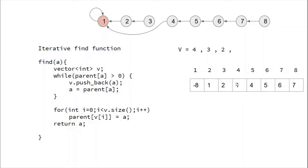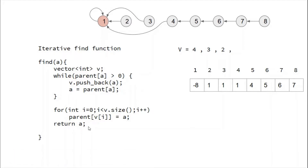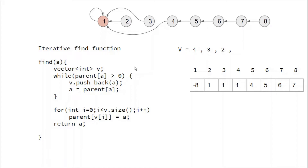At index 4 we change the value to 1, at index 3 we change it to 1, and index 2 was already pointing to 1 so there is no change. After updating all these elements we simply return a, the actual parent, since find always returns the parent. I advise you to learn the recursive version instead, as recursive functions are easier to write.